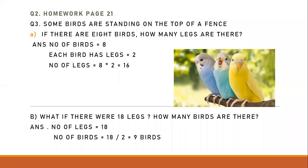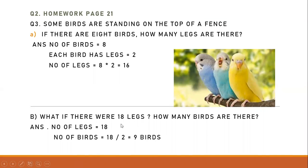These two questions are opposite to each other. In the first question we were given the number of birds and asked to find the number of legs. Now in this question we are given the number of legs and have to tell how many birds there are. So number of legs is eighteen — divide by two because each bird has two legs. Two times nine is eighteen, so there are nine birds if there are eighteen legs.